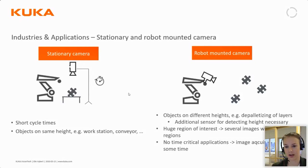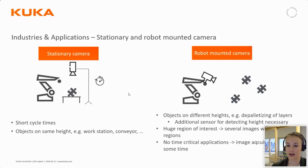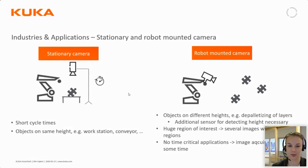On the right-hand side, you can see the option where the camera is mounted on the robot. If you do this, you have to use an additional sensor for detecting the height of the work objects. You should not use this for time-critical applications, but it can be beneficial because you don't have to have an extra strand with the camera in your cell.